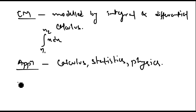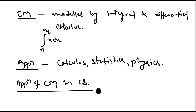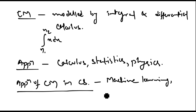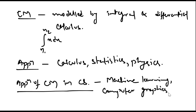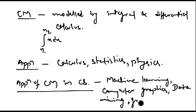Specifically, in the field of computer science, continuous mathematics has several applications. Machine learning uses it. Computer graphics also uses it — many algorithms and their implementation in computer graphics rely on continuous mathematics. There is also the field of data mining, and graph theory is another such application. So there are many applications of continuous mathematics in the field of computer science.